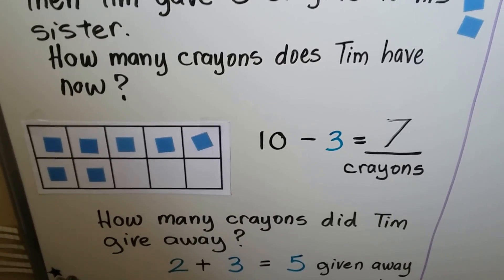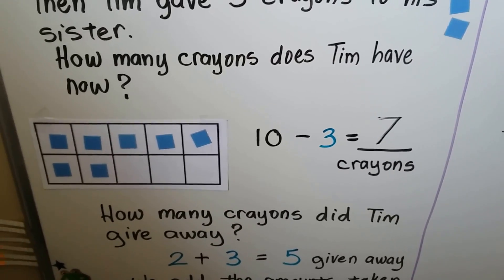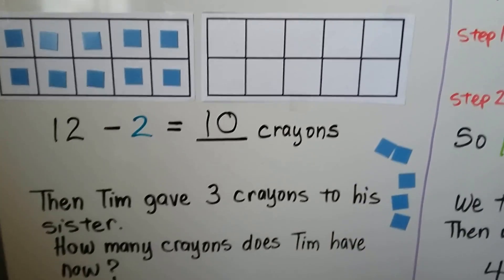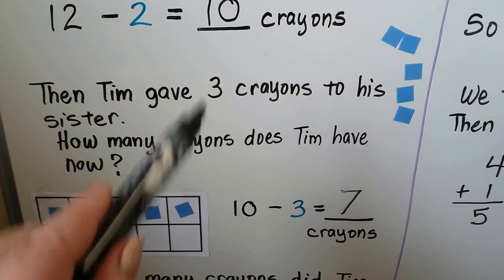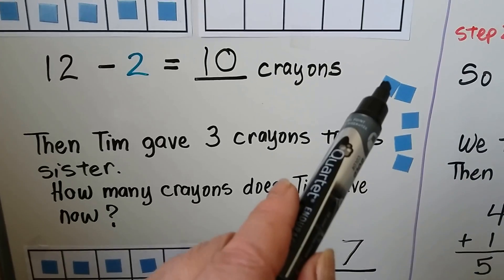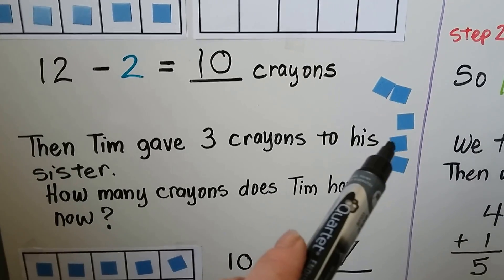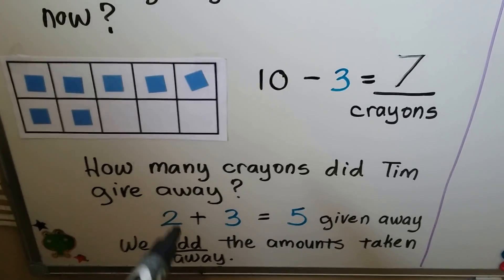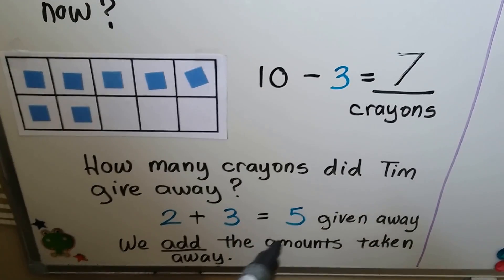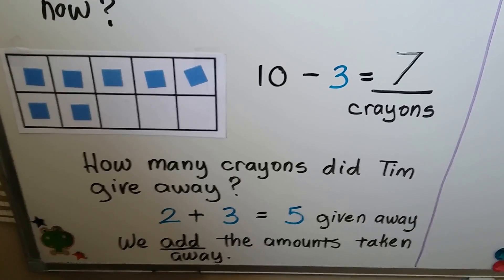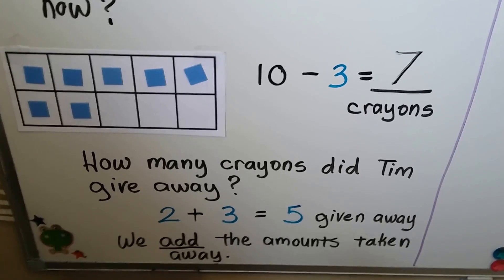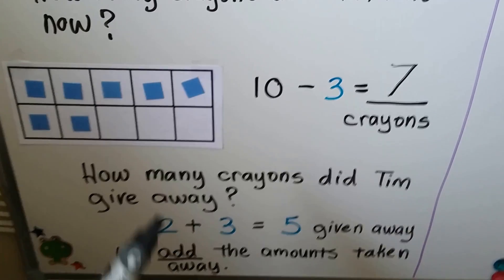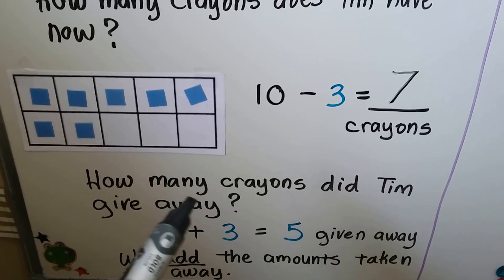So how many crayons did Tim give away? He gave away 2 up here, then he gave away 3 from here — that's 1, 2, 3, 4, 5. 2 plus 3 is equal to 5. Five were given away. We add the amounts that were taken away to find the total sum of what was taken away.